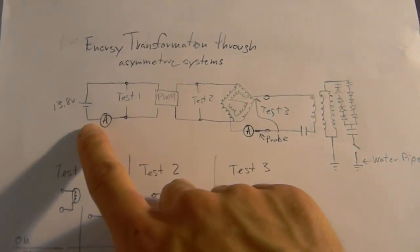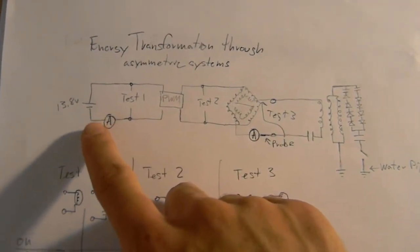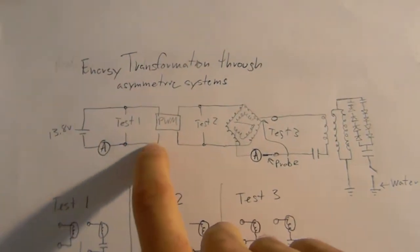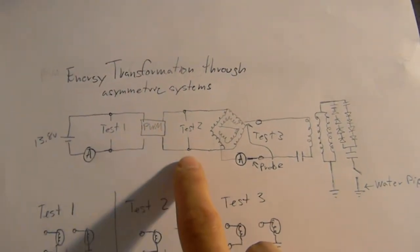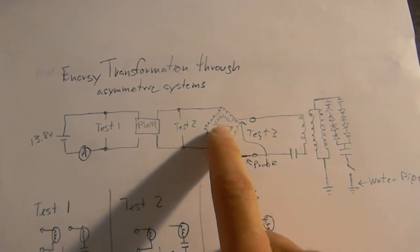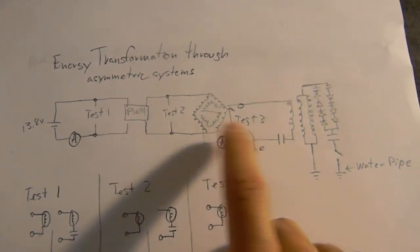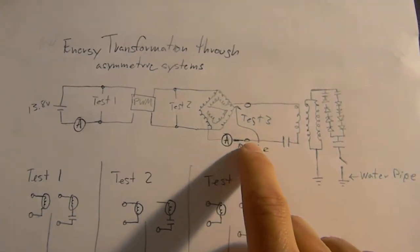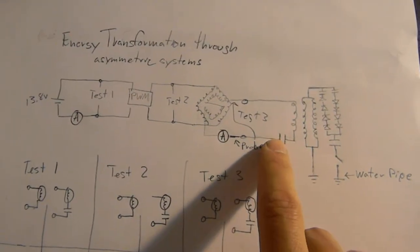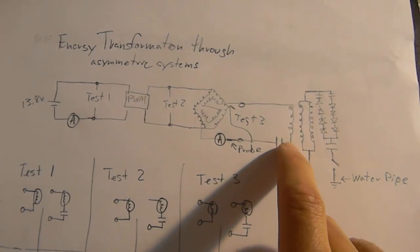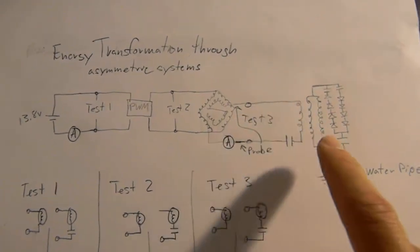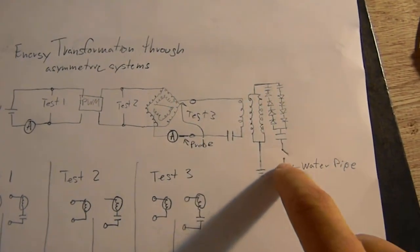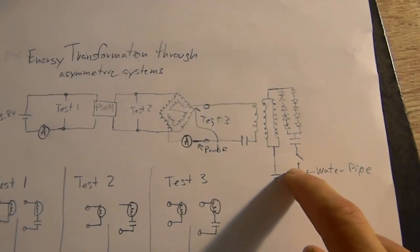We have a voltage supply, power supply, 13.8 volts. We have an amp meter that powers a power wave modulator, and the power wave modulator then powers our asymmetrical motor slash generator. Then we have an amperage reading coming out of the generator which goes into a microwave capacitor in series with the rodent coil, and that's what I was showing in the last video of how energy can be basically pulled out of the earth.